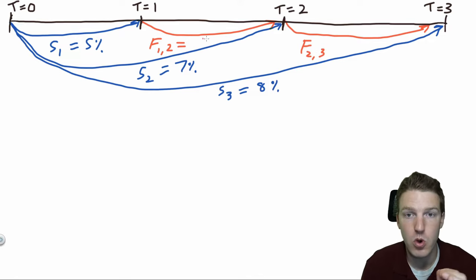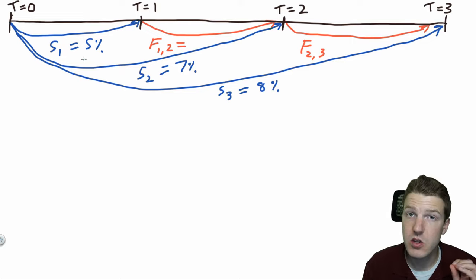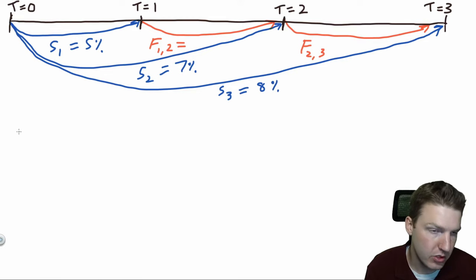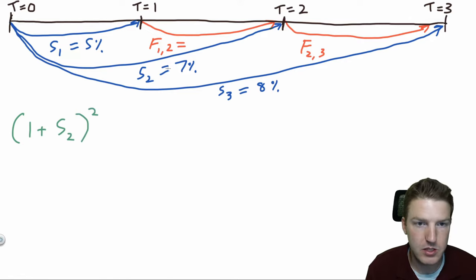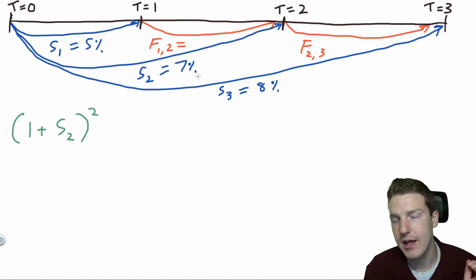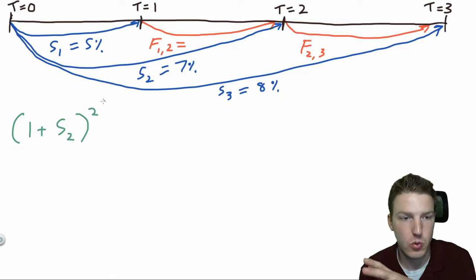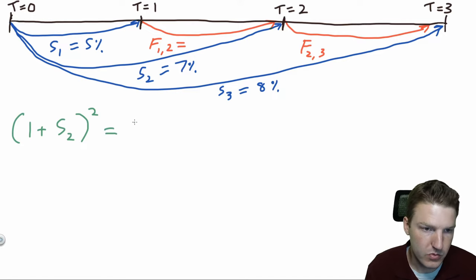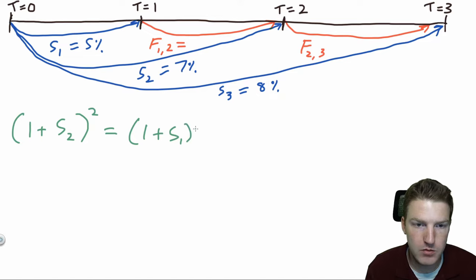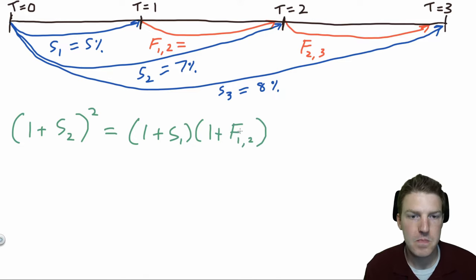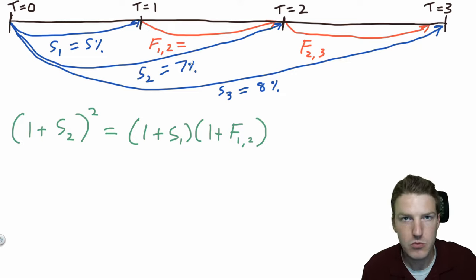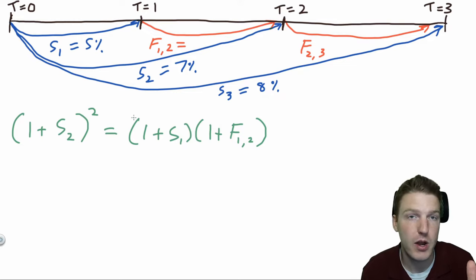Now let's calculate the forward rate from year one to year two using the spot rates. We can use the spot rate at time one and the spot rate to time two to find this forward rate. So it's going to be: (1 + S2) squared — because you're essentially getting this rate for two years, so if you lend someone money for two years at 7%, it compounds twice — equals (1 + S1) multiplied by (1 + F1,2). You're basically saying if I get the period-one payment multiplied by the period-two payment, it should equal out to the twice-compounded two-year spot rate payment.